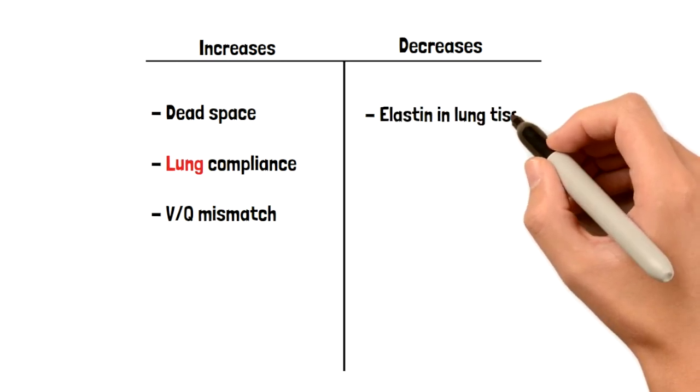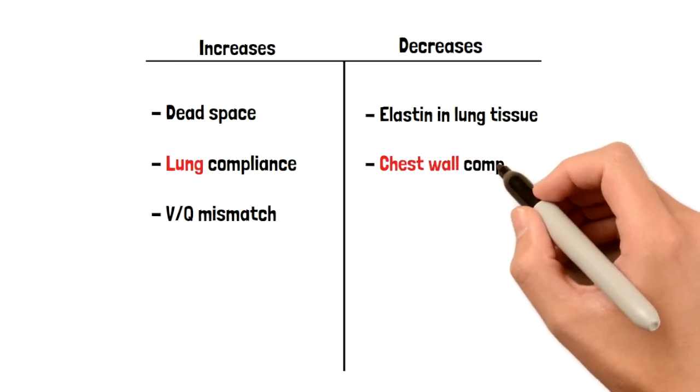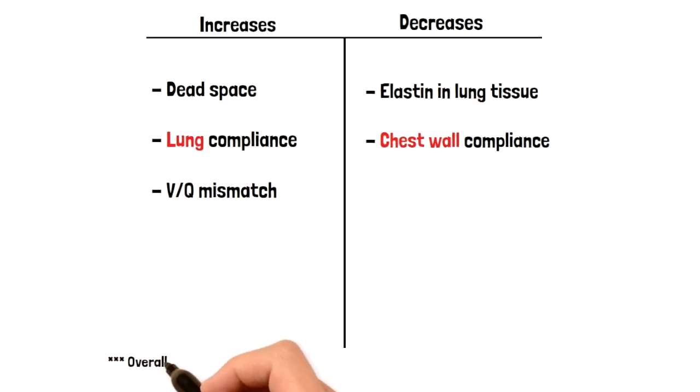Now, things that will decrease. The elastin tissue will decrease. This is a common theme seen in blood vessels as well - as you age, it will stiffen and decrease in elastin content. The chest wall compliance will also decrease.